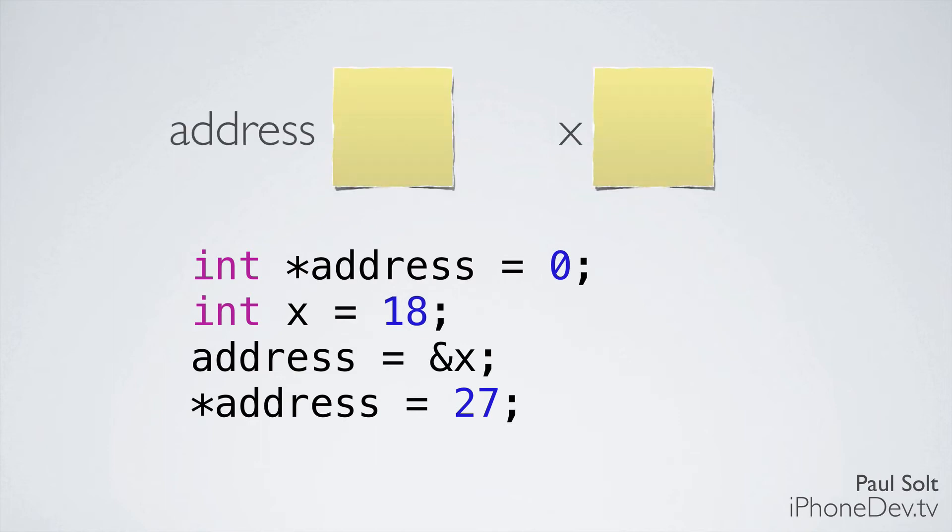So let's look at the sticky notes. We have two variables here. One of them is our address int pointer and our other one is our integer that we're just storing a value in. Each one of these has some memory address where it sits in your computer much like a house address. If we look at the first and the second line, we can get those initial values. We set the address to zero, also known as null, and we initialize x to its first value.